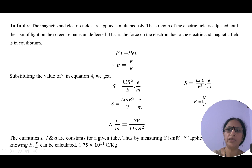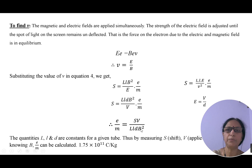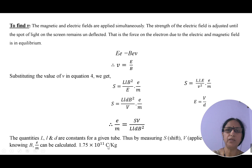Substituting E = V/D, we get the expression for shift S = (capital L · small l · D · B²·e) / (V · m). Therefore, cross-multiplying: e/m = (S · V) / (capital L · small l · D · B²). From the experiment, we can measure the shift S and the applied potential V. Capital L, small l, and D are tube constants provided by the manufacturers. The magnetic field strength B is calculated using B = B_H · tan(θ), where B_H is the Earth's horizontal field. Knowing all these values, one can determine the specific charge e/m of an electron. J.J. Thomson calculated this value as 1.75 × 10¹¹ C/kg.